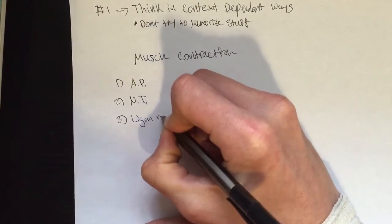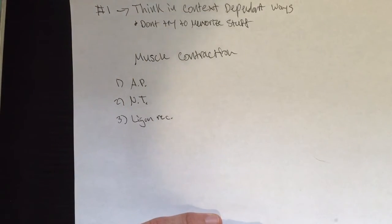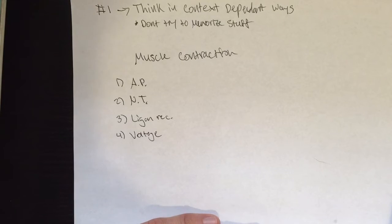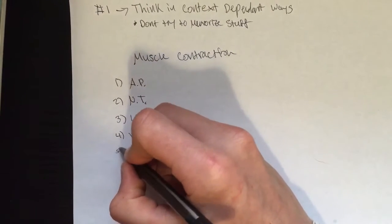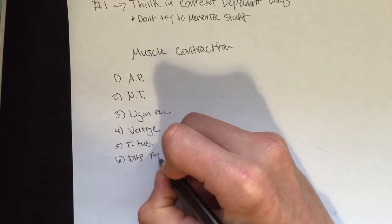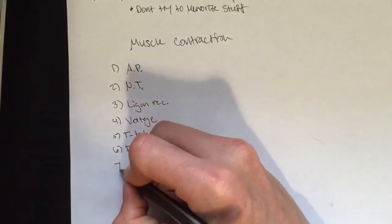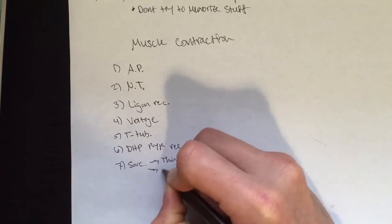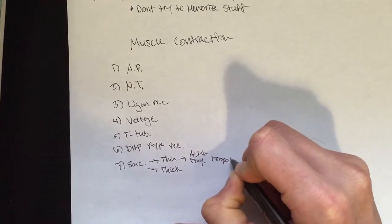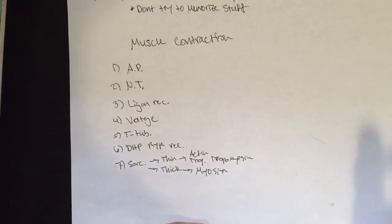I know that you need a ligand receptor on the postsynaptic neuron or on the muscle. In this case, it's an ACH receptor. I know that you need some voltage to go down and open up calcium storage on the muscle. For that we need T-tubules, we need a DHP and RYR receptor to have a conformational change to release that calcium. We need the muscle itself, the sarcomere, which has a thin filament and a thick filament. Within those has actin, troponin, tropomyosin, sorry about the messy writing, and then on the thick is where the myosin is.